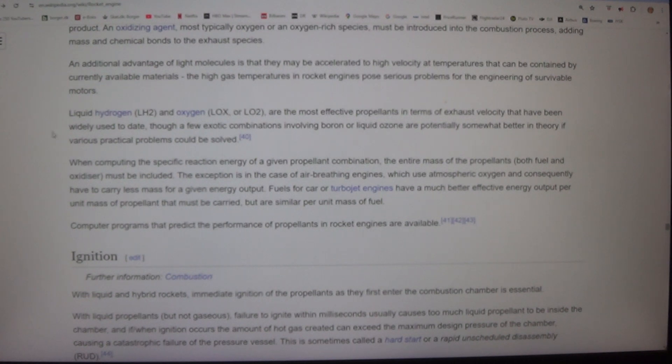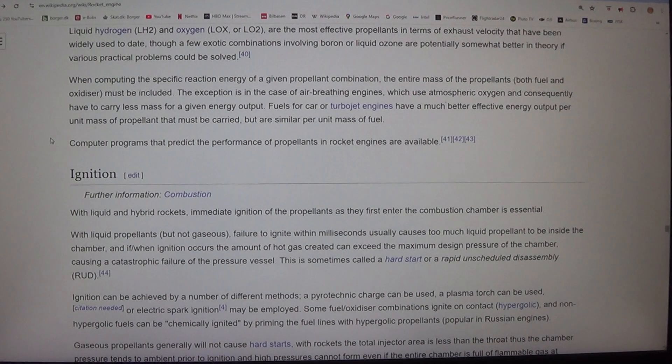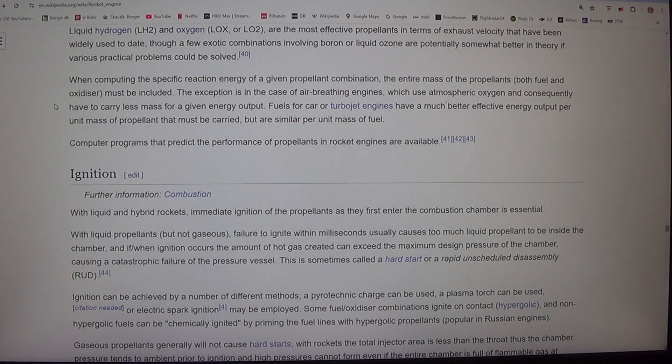Liquid hydrogen (LH2) and oxygen (LOX or LO2) are the most effective propellants in terms of exhaust velocity that have been widely used to date, though a few exotic combinations involving boron or liquid ozone are potentially somewhat better in theory if various practical problems could be solved. When computing the specific reaction energy of a given propellant combination, the entire mass of the propellants, both fuel and oxidizer, must be included.